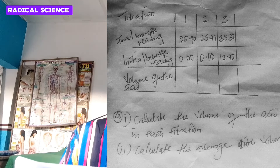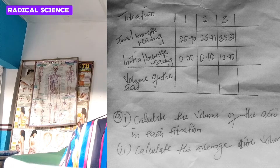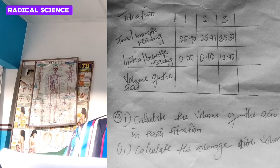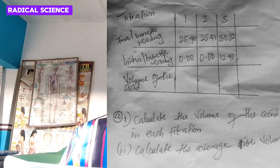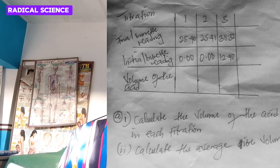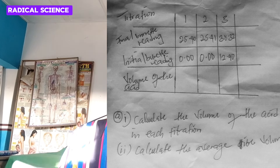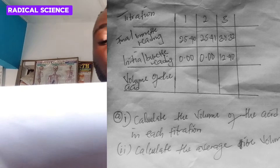Looking at the values: for the first titration, the final burette reading is 25.40 cm³ and the initial burette reading is 0.00. For the second titration, the final reading is 25.41 cm³ and the initial reading is 0.00. For the third titration, the final reading is 38.32 cm³ and the initial burette reading is 12.09 cm³.